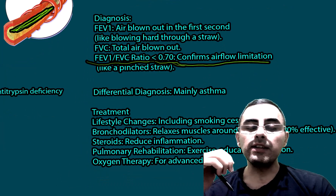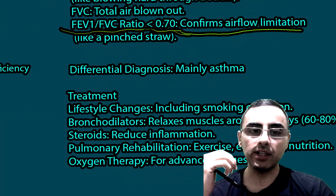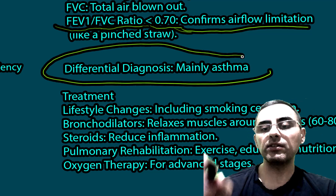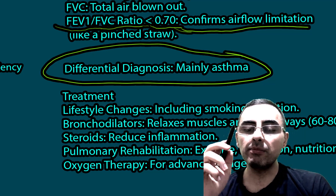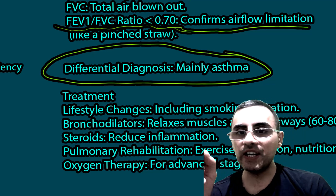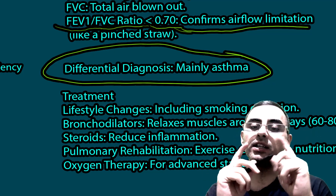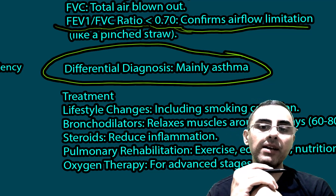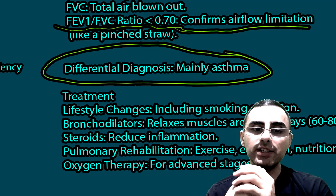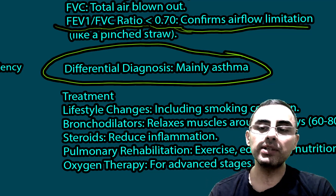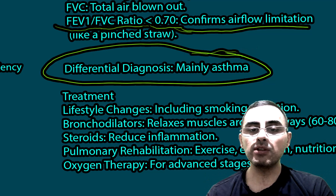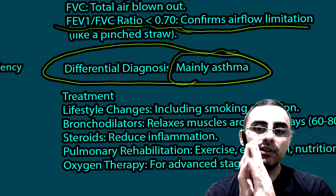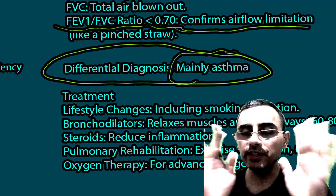For differential diagnosis, the main distinction is between COPD and asthma. The key difference is that asthma is reversible and COPD is irreversible. When there is damage to alveoli it is an irreversible process, so COPD is irreversible, while asthma symptoms are reversible. Other symptoms can be similar, but reversibility is the main difference.